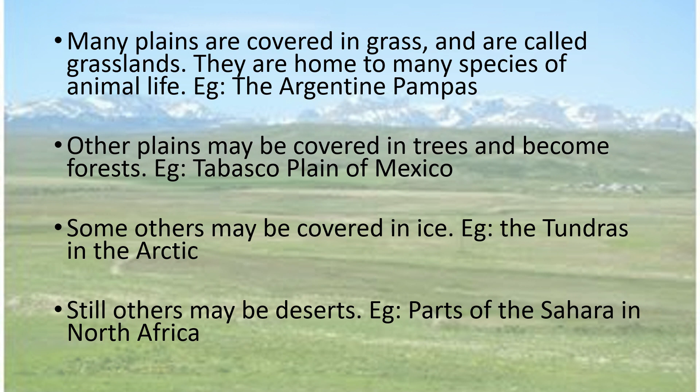Now, depending on how Plains are covered, they have got slightly different names. If they are covered in grass, they are called grasslands. They have got many wildlife, like the Argentine pampas. Sometimes they may be covered in trees, and we call them forests, like the Plains of Mexico. Sometimes they may be covered in ice and snow, like the Tundras in the Arctic. And sometimes they may be covered in sand with very, very less green vegetation. They are called deserts, and they are certain parts of the Sahara.